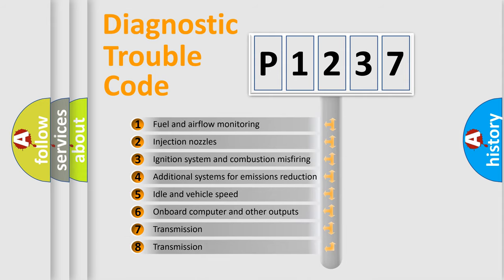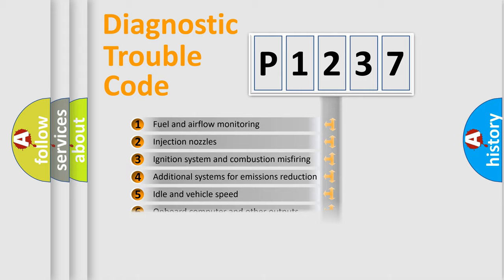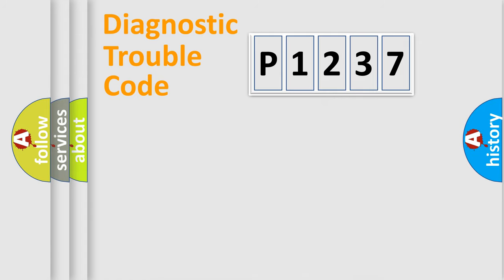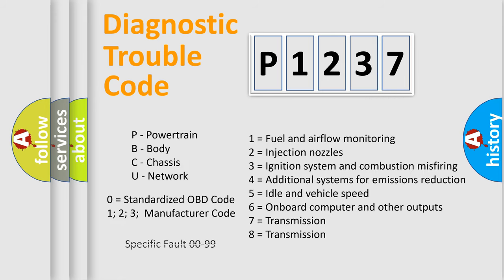The third character specifies a subset of errors. The distribution shown is valid only for the standardized DTC code. Only the last two characters define the specific fault of the group. Let's not forget that such a division is valid only if the second character code is expressed by the number zero.